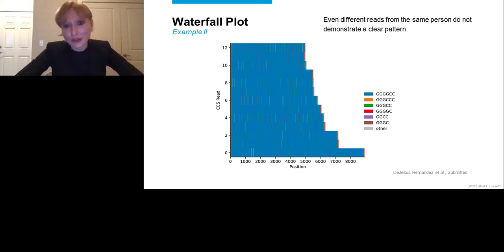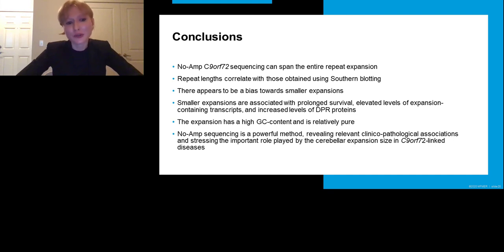So what have I shared with you today? Well, hopefully I've convinced you that no-amp C9ORF72 sequencing can span the entire repeat expansion. That repeat lengths based on no-amp sequencing correlate with those obtained using southern blotting, but that there appears to be a bias towards smaller expansions, and that the sizes might be underestimated. I've also demonstrated that smaller expansions are associated with prolonged survival, with higher levels of expansion-containing transcripts, and with higher levels of dipeptide repeat proteins. Moreover, the expansion has a high GC content and appears to be relatively pure. Thus, no-amp sequencing is a powerful tool, and it has the ability to reveal relevant clinical pathological associations for C9ORF72-related disorders. It actually stresses the important role of the cerebellar expansion size in these fatal neurodegenerative diseases.